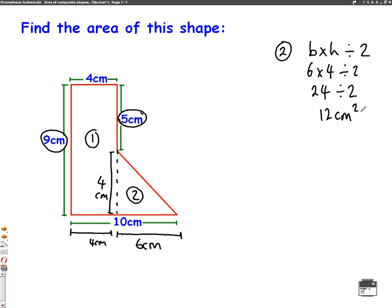Now we can find the area of number 1. So number 1 is just a rectangle. It's 4 across, so it's base times height. 4 across times 9 up. So 4 times 9 is 36 centimetres squared. So all I need to do is add up these two numbers, 36 add 12, which will give us 48 centimetres squared, which is the answer to this question.